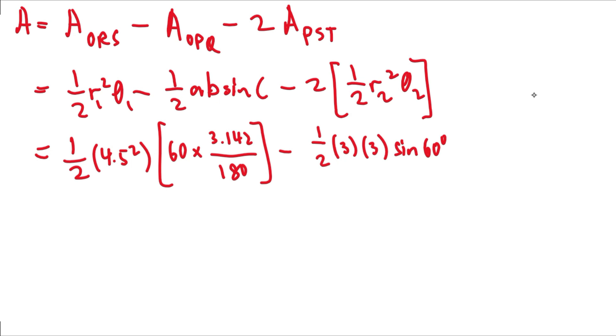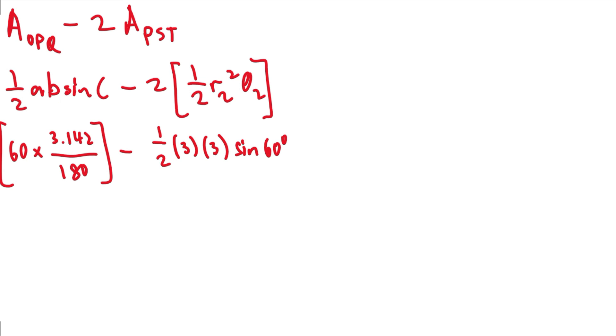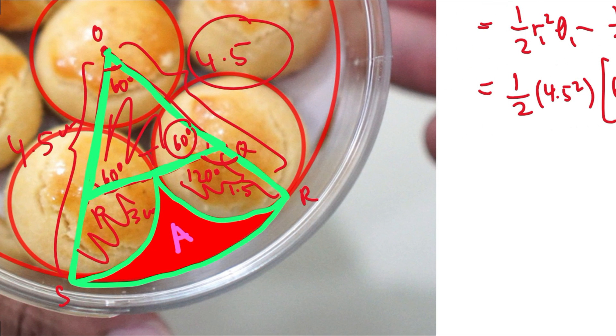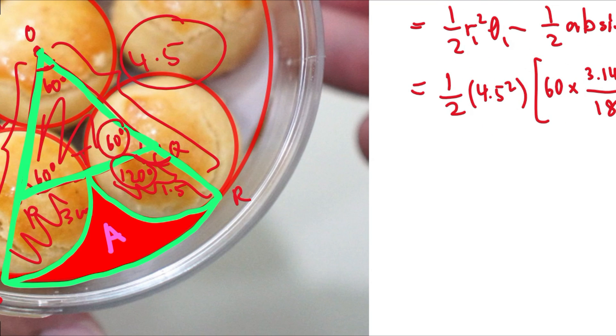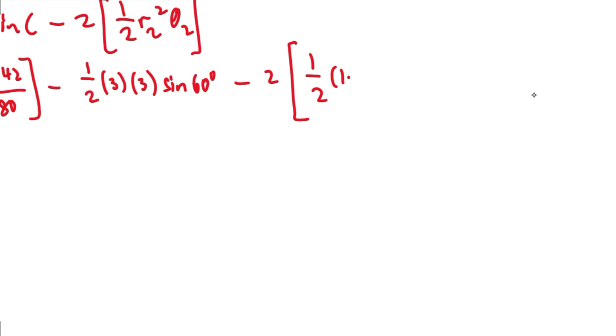And then we minus two times the area of the small sector. So this will be 1 over 2. The angle of this sector is 120 and the radius here is 1.5. So again, this will be 1.5 square. But this time theta, once again, we have to convert. So this will be 120 times 3.142 divided by 180.